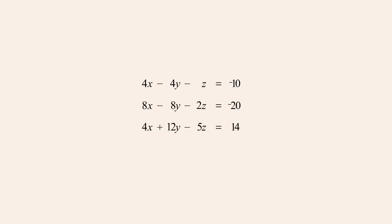In this example, the second equation is a multiple of two times the first equation and so the first equation is a multiple of one-half times the second equation. Therefore, this pair of equations is dependent.